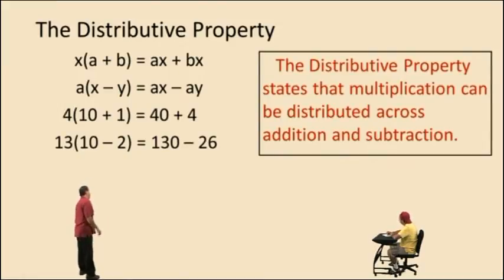The distributive property states that multiplication can be distributed across addition and subtraction. Basically, we use this property to remove parentheses. And we also use it to help us with our multiplication table. In the last video, we showed that 4 times 11 can be done as 4 times 10 plus 1, and 13 times 8 can be done as 13 times 10 subtract 2. So let's try some more problems here.